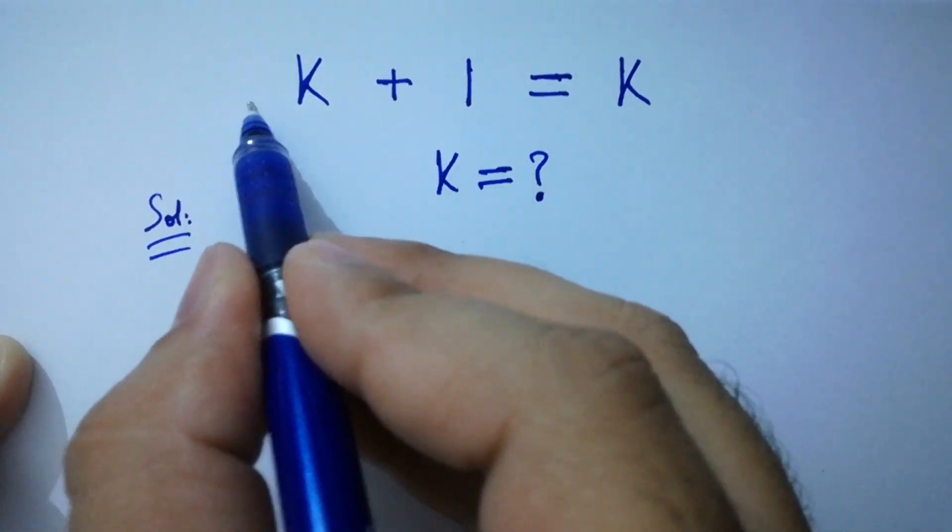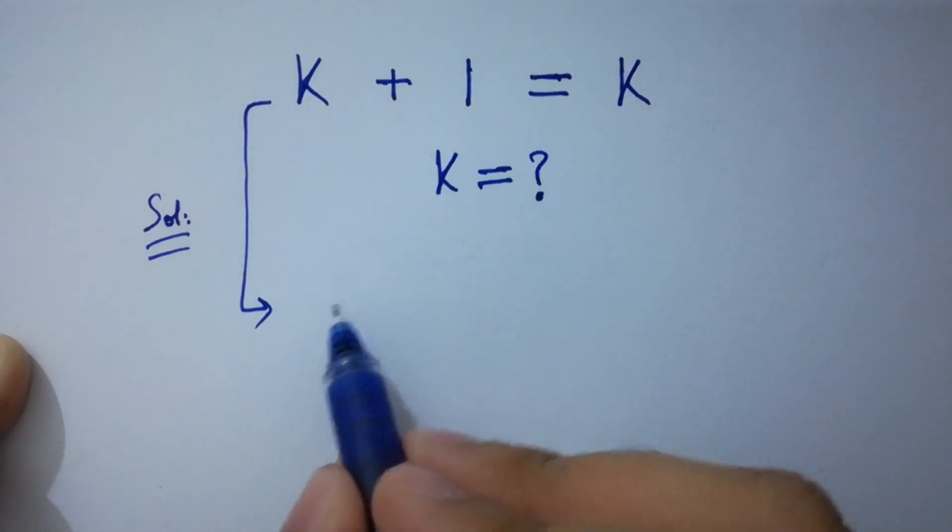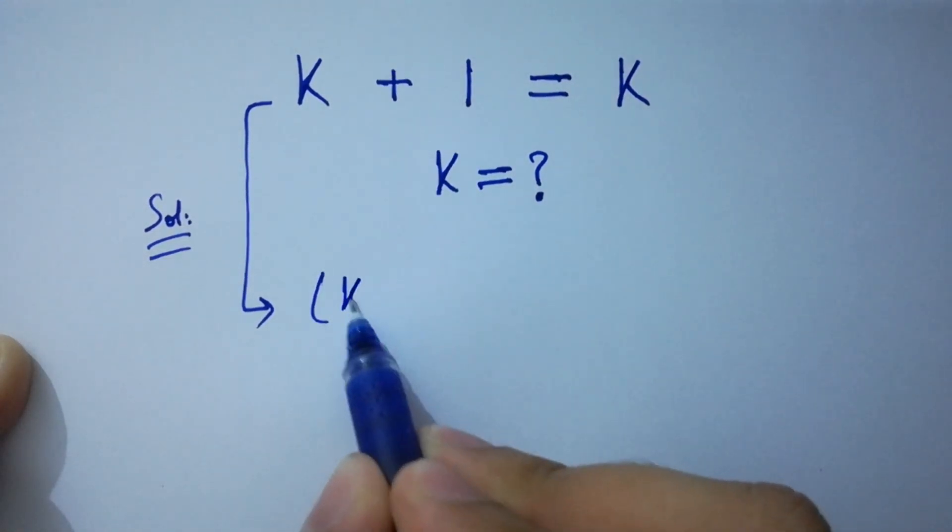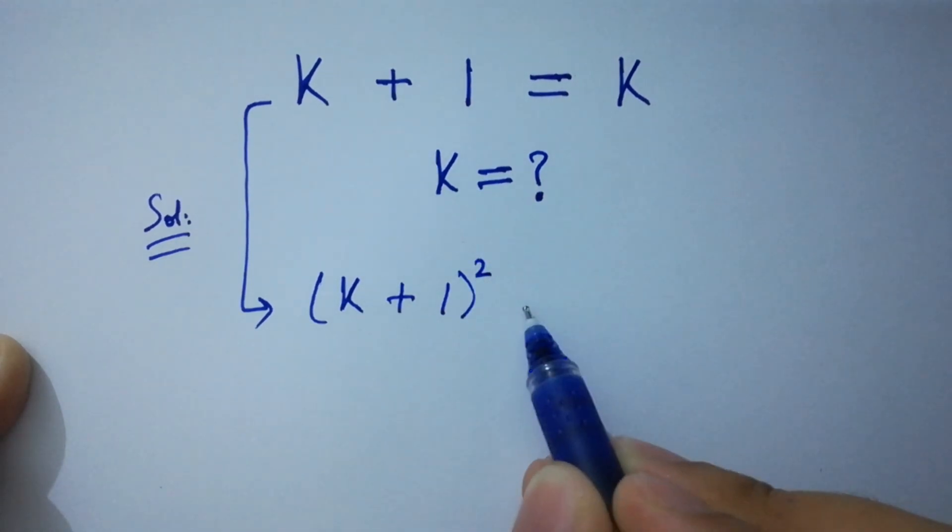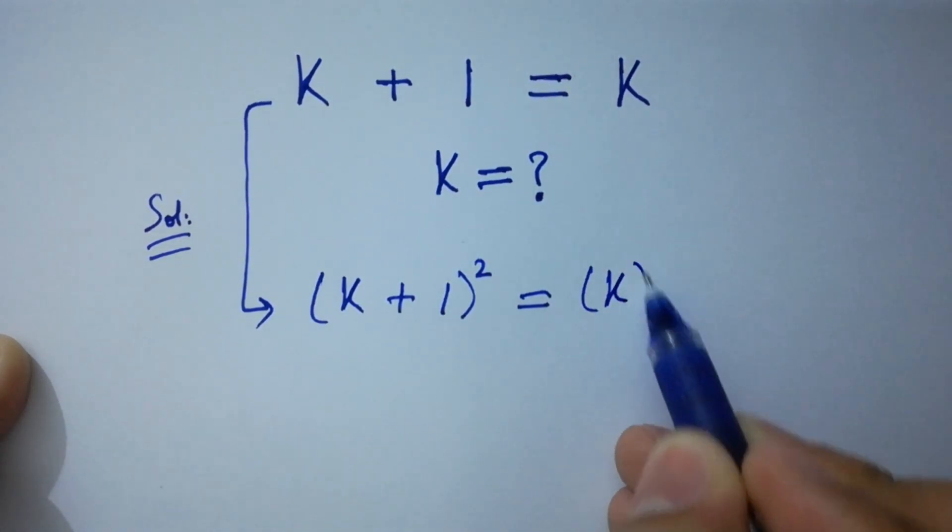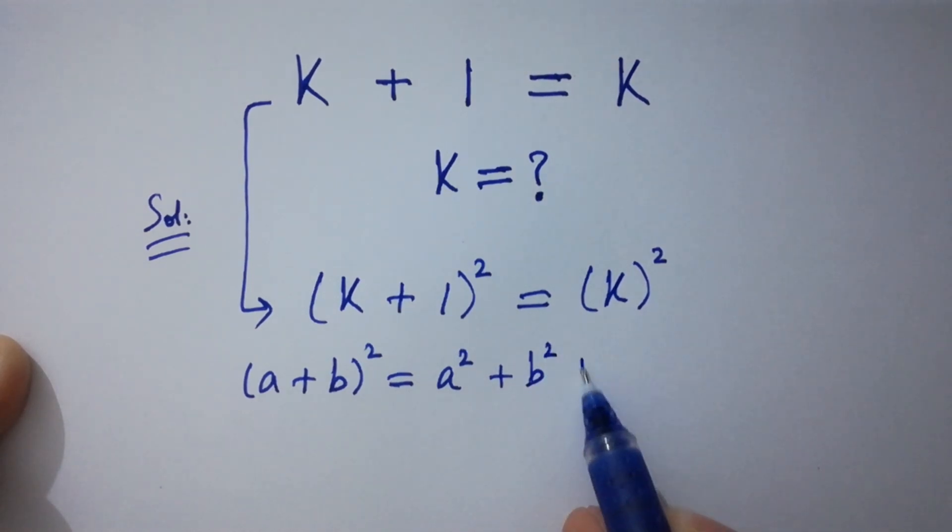To solve this, take square on both sides. k plus 1 square equal to k square. We know the formula of a plus b all square which is equal to a square plus b square plus 2ab.